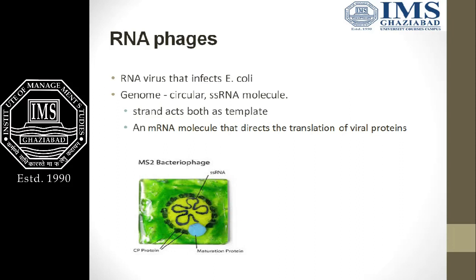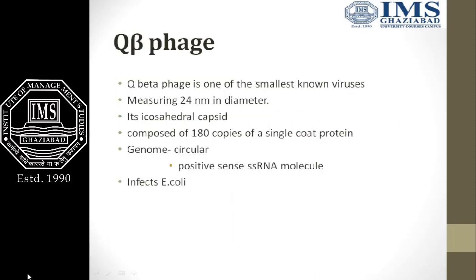Being positive-sense, the RNA can act as a template and can also start translation of viral proteins. This is the structure of MS2 bacteriophage. It has a capsid protein, a maturation protein, and the single-stranded RNA present in a circular form.